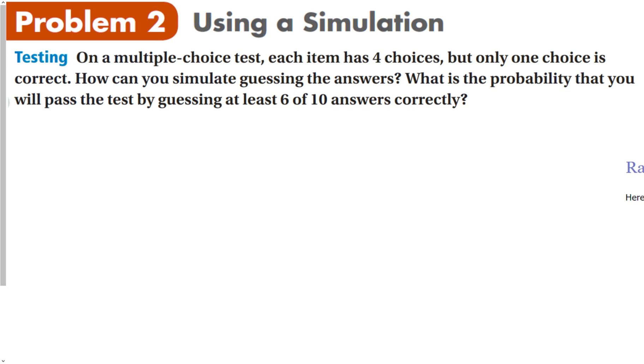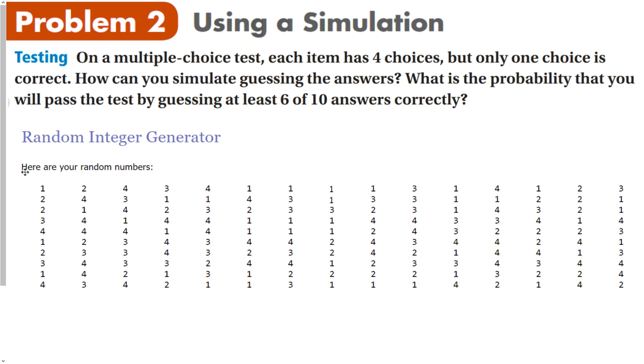We can use a random number generator and just generate a bunch of numbers. Here is what I did on a random integer generator. Basically, there's four questions on this test. Each item has four choices, but only one choice is correct. So let's just say number one is correct. So one is the correct answer. What we're looking for is how many of these tests – each one has ten questions. So each row here has ten random numbers, one through four. Did any of them actually get six ones?